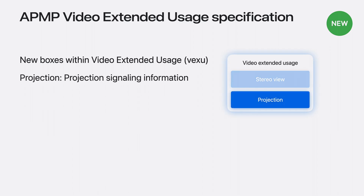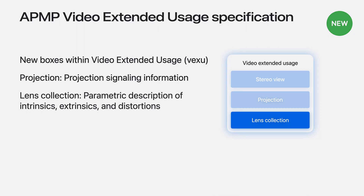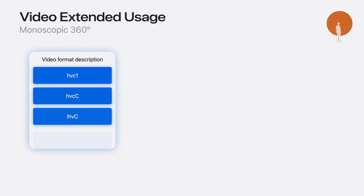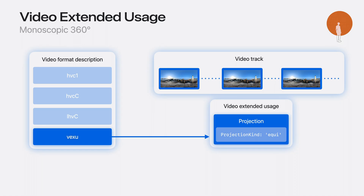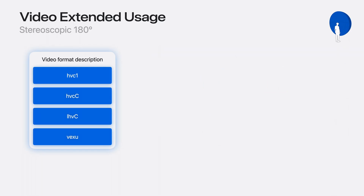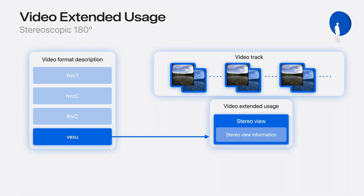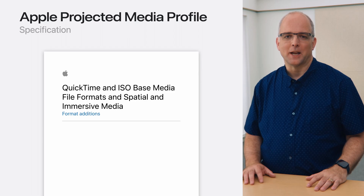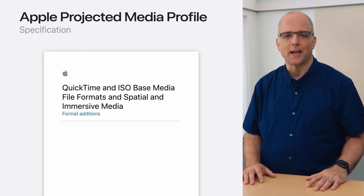The projection box signals one of the projection types, such as equirectangular, half-equirectangular, or parametric immersive. A lens collection box contains the parameters for intrinsics, extrinsics, and lens distortions for the parametric immersive projection. The view packing box contains information about the arrangement of eyes in a frame-packed image, whether side-by-side or over-under. Here's an example of the minimal signaling for a monoscopic equirectangular file: the projection box with projection kind indicating equirectangular. A stereoscopic 180-degree file requires a stereo view box in addition to the projection kind signaling half-equirectangular. Check out the QuickTime and ISO-based media file formats and spatial and immersive media specification on developer.apple.com for more information.